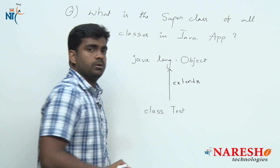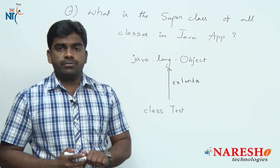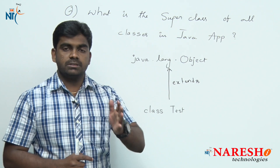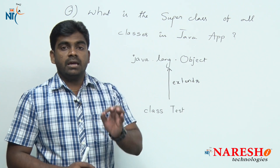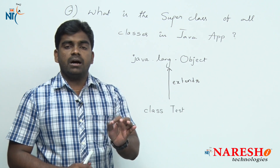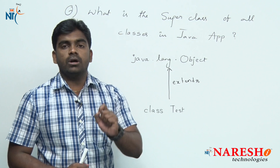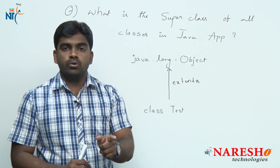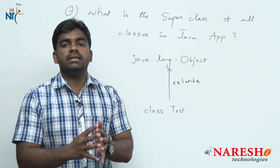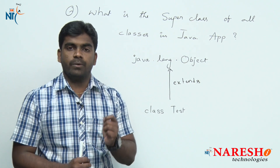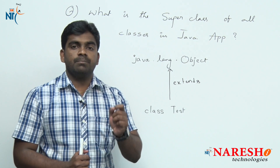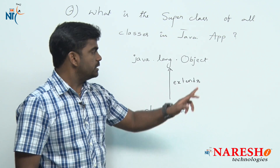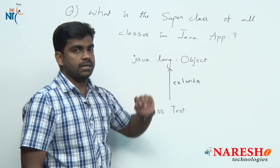Supposing in any Java application, if you write any class — for example, a test class — that test class is silently and implicitly extending from java.lang.Object. So from the very first Java application, every Java class supports a single inheritance concept by extending the functionality of the Object class.